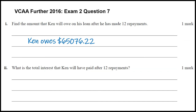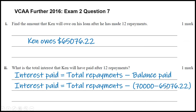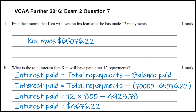For part A2 we're asked about the total interest he would have paid. We can find out how much he has paid overall and then subtract the amount that's been deducted from the balance. He started with $70,000 and now owes roughly $65,000, so the balance paid off is roughly $5,000. But he's actually paid back a lot more than that because he's paid 12 lots of $800. So if we subtract the total amount paid from the balance that's actually been paid off his loan, we find the amount of interest paid.